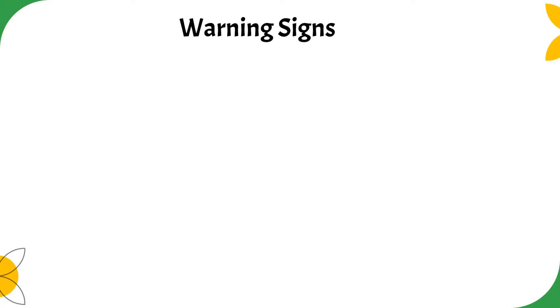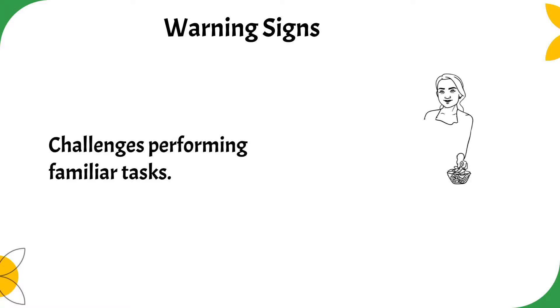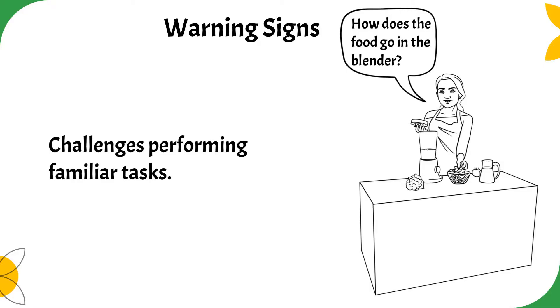Memory loss that affects your ability to perform day-to-day activities? That's a warning sign of dementia. One of 10 that are commonly used in supporting a diagnosis. Others are challenges performing familiar tasks. It's not struggling with how to make a five-course meal. It's struggling with how to make a cup of tea.